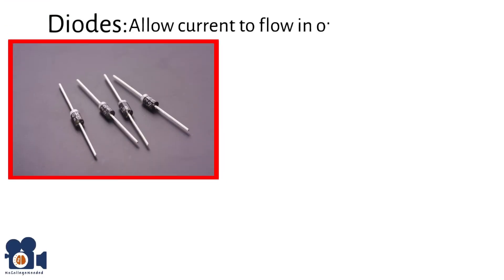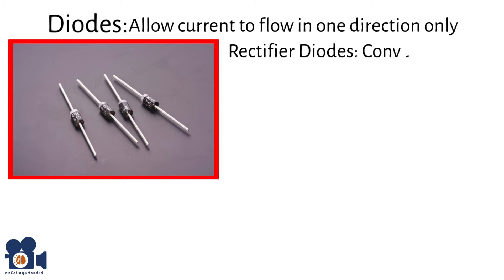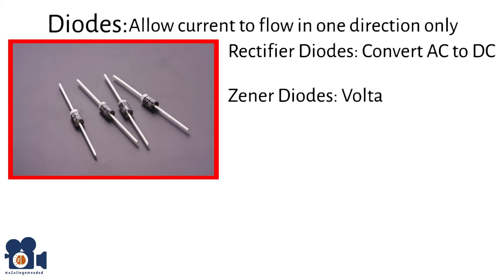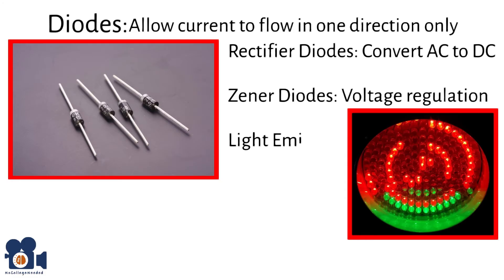Diodes allow current to flow in one direction only, acting as a one-way valve for electric current. Rectifier diodes are used in power supplies to convert AC to DC — for example, in a power adapter, rectifier diodes convert the incoming AC from the wall outlet into DC used to charge a phone or laptop's battery. Zener diodes are used for voltage regulation and protection, maintaining a stable output voltage despite variations in input voltage. Light-emitting diodes emit light when current flows through them and are commonly used in TV screens, indicators, and light bulbs.